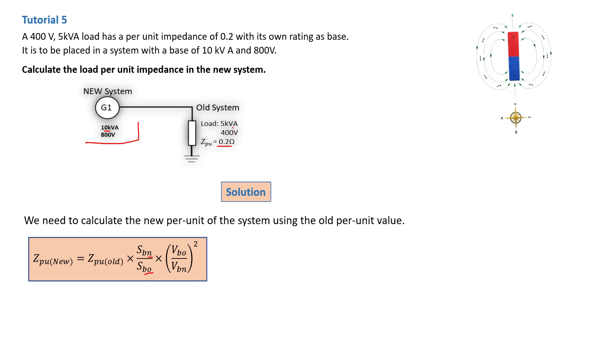...V base old, which is 400 volts of the old system on the load, over V base new, which is 800 volts of the new system. Basically, you just apply the general formula and figure out what quantities you have so you don't mix them up.